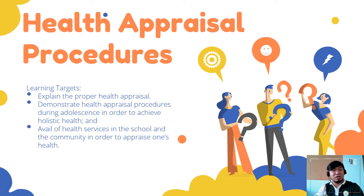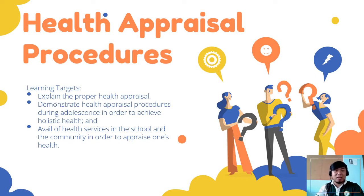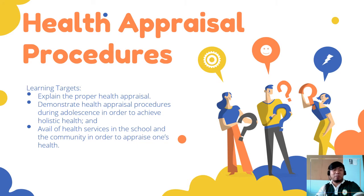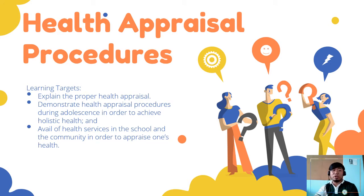These are the learning targets. Number one, explain the proper health appraisal. Number two, demonstrate a health appraisal procedure during adolescence in order to achieve holistic health. And number three, avail of health services in the school and the community in order to appraise one's health.